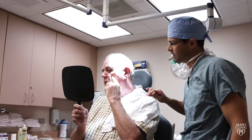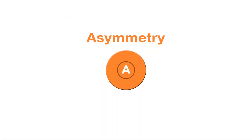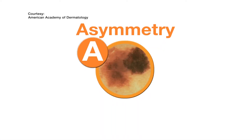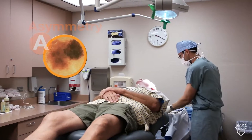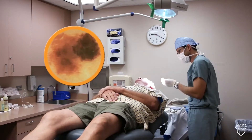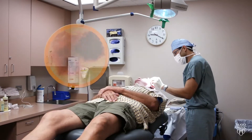According to the American Academy of Dermatology, in melanoma checks, A is for asymmetry. Typically a lesion will be symmetrical if it's normal. Dermatologist Dr. Juan Carlos Martinez says an asymmetric lesion can signal trouble.